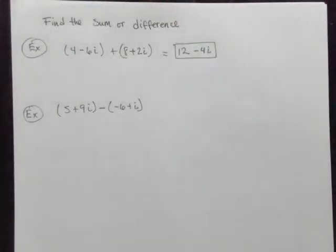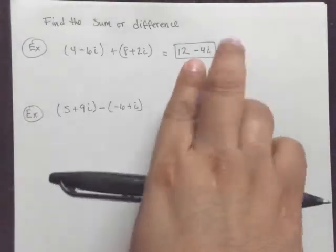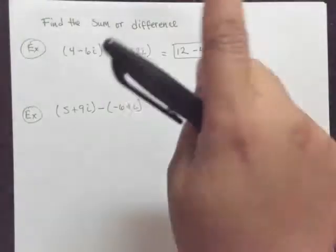And remember, it's got to be in the form of a plus bi. So 12 minus 4i fits that form because that is what a complex number is. If you type your answer anywhere online, on maybe a homework website or something like that, if you type it in the other way around, it may not mark it correct.